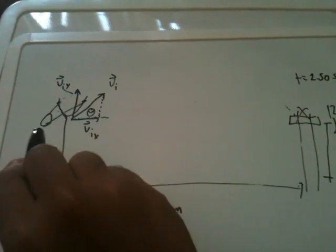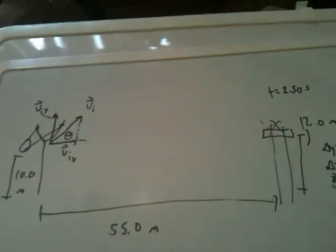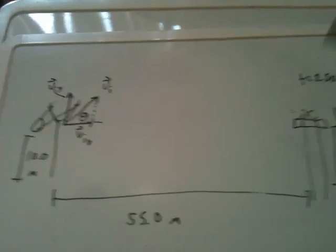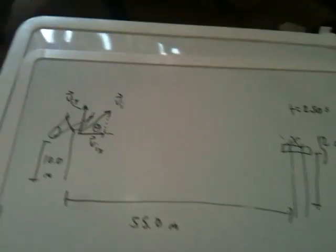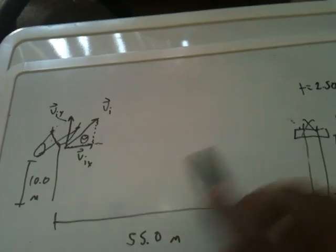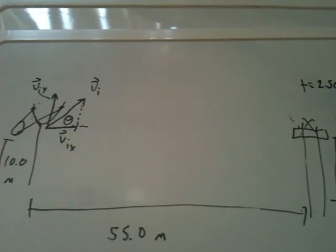I drew a really crude sketch here. This is the bird, the red bird, and if you know from the game, you just pull back in the slingshot and hope for the best. It's at an initial height of 10 meters from the ground, and 55 meters away is the pig on a platform 12 meters high. The question is asking what should the launch angle theta be with respect to the horizontal, given that the bird is in the air for two and a half seconds?